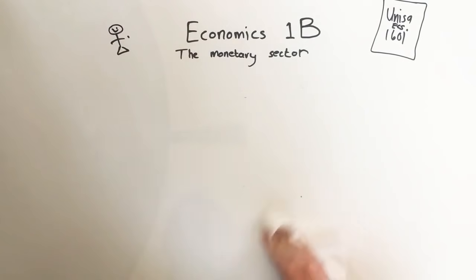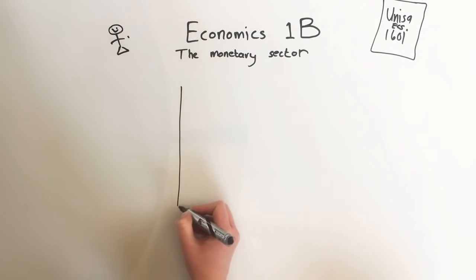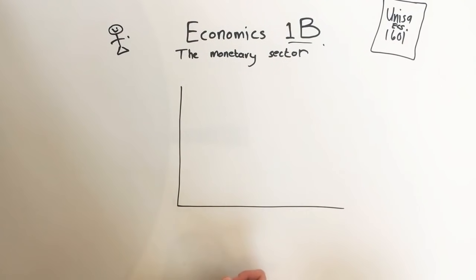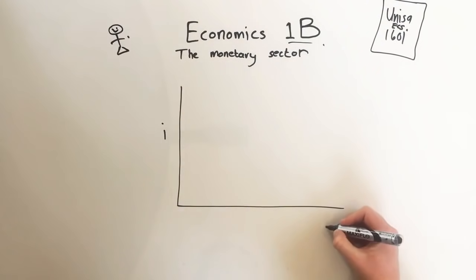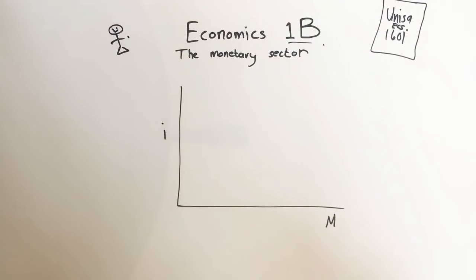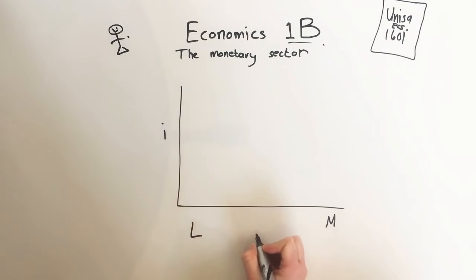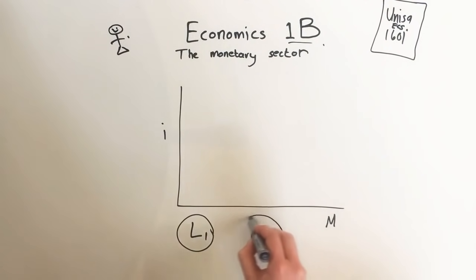Now we are going to do the graph that depicts the demand for money. Economics is full of graphs — you should know that by now. This graph has interest rate on the vertical axis and money on the horizontal axis. We have the demand for active balances and the demand for passive balances.